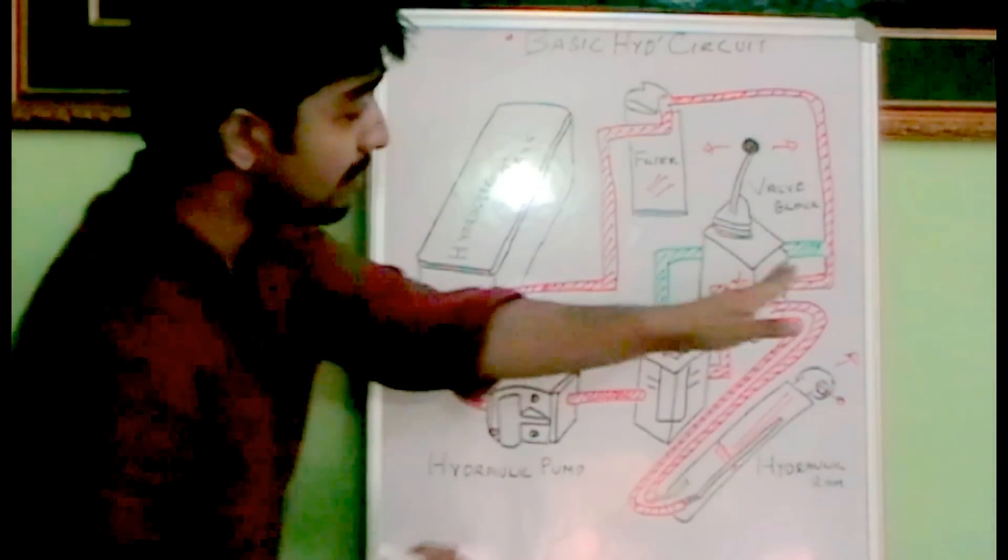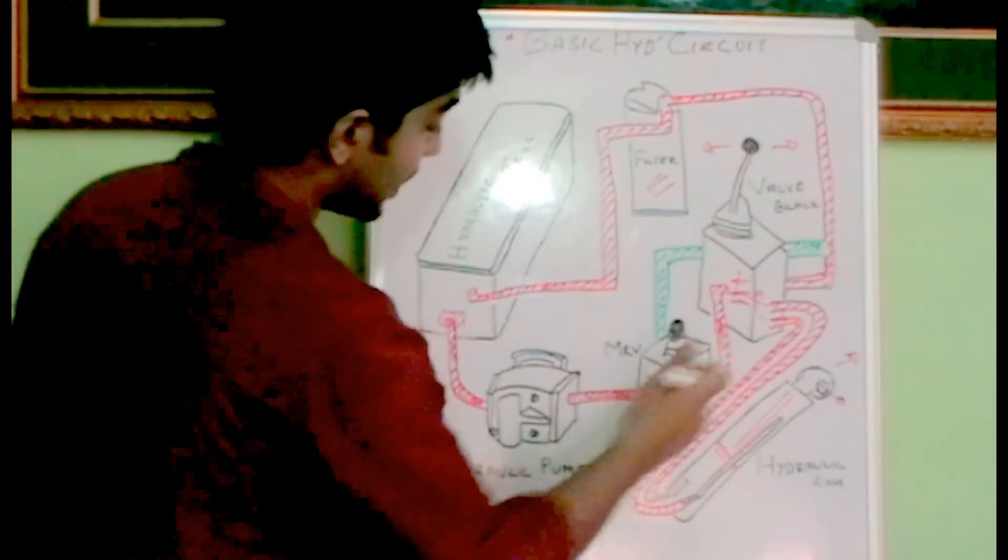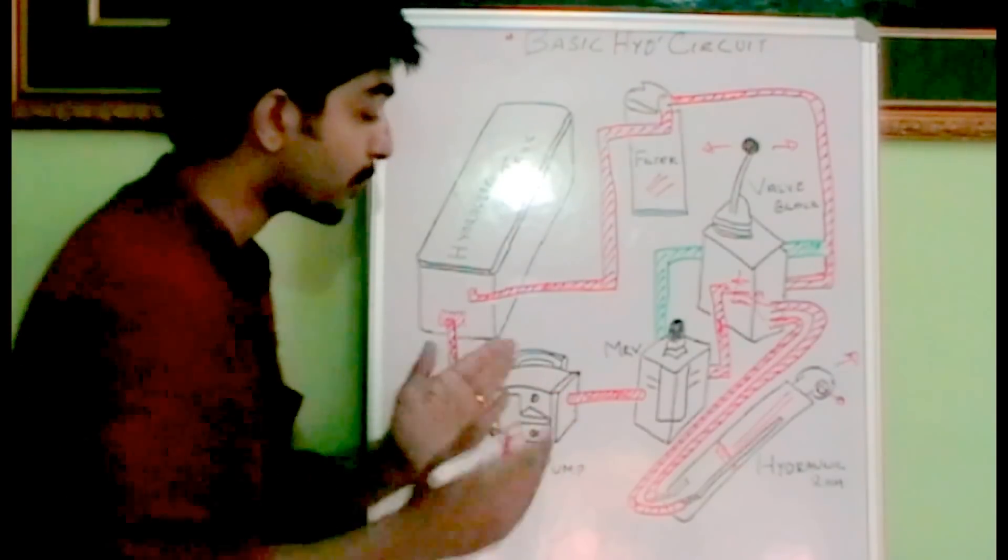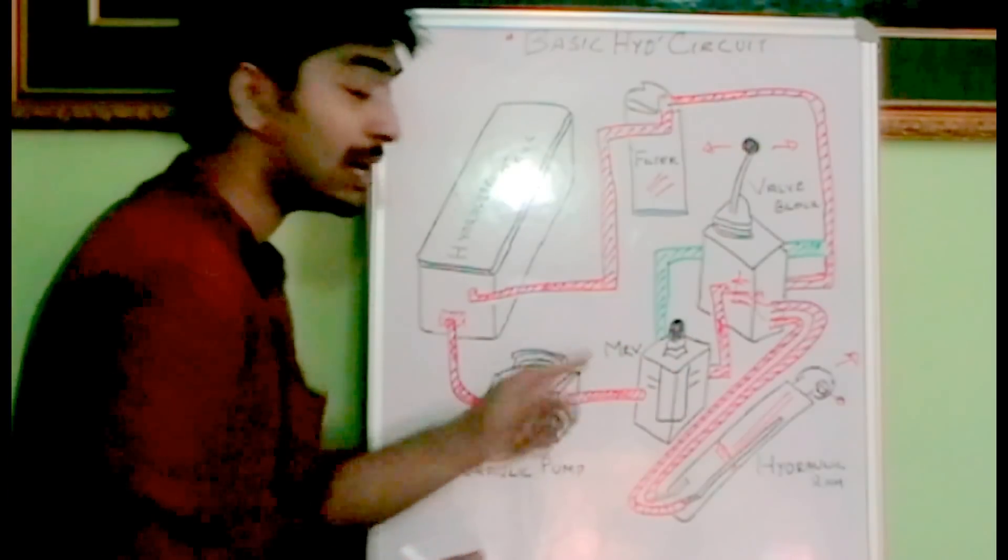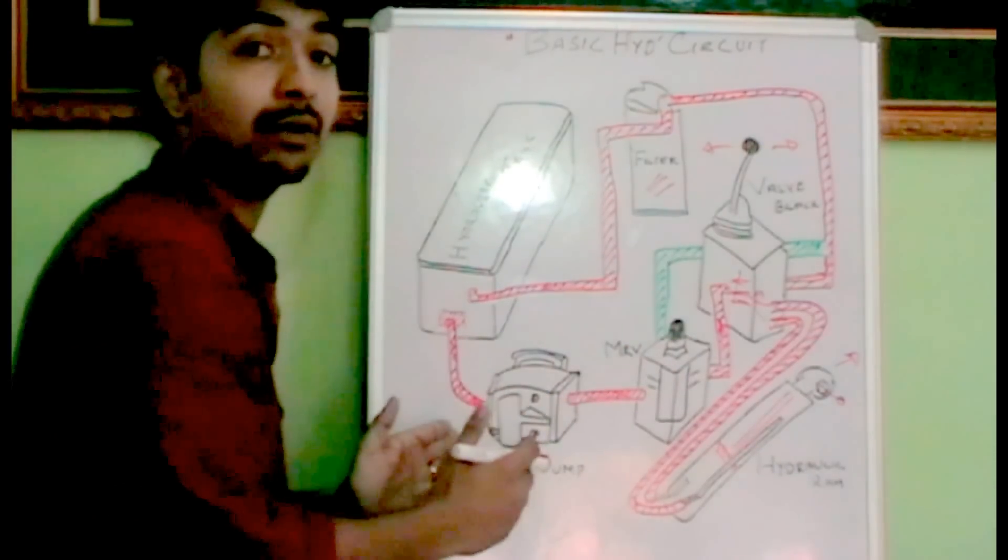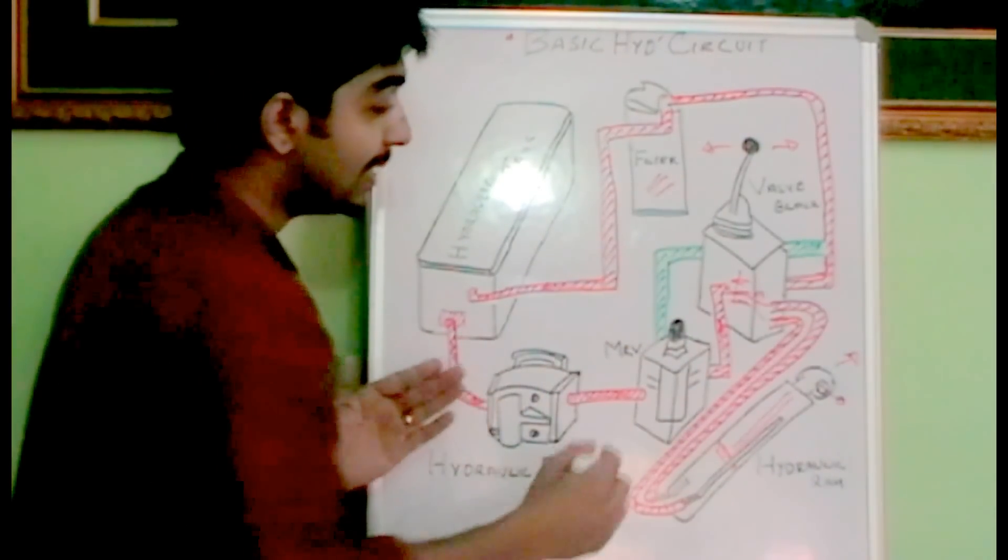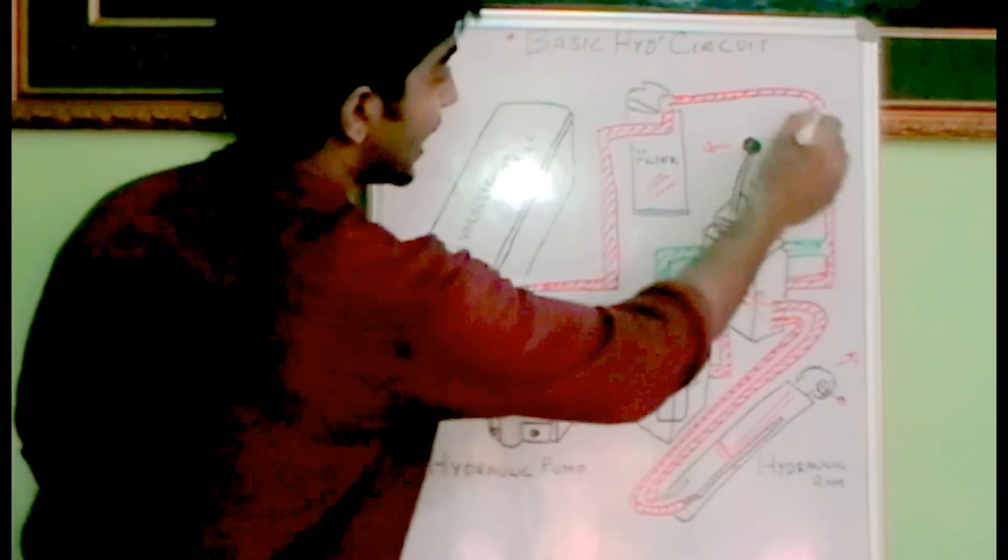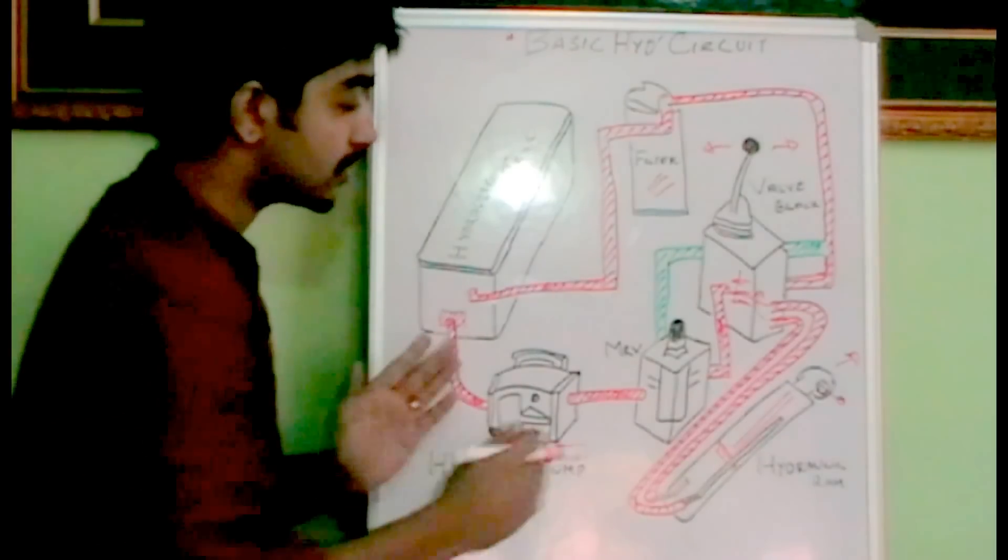If back pressure occurs, that pressure will come towards the hydraulic pump. We have a relief valve for safety purposes to protect or safeguard the hydraulic pump. The purpose of the relief valve is to protect the hydraulic pump. If back pressure is generated or coming, it gets released towards the hydraulic tank through this line without hurting the hydraulic pump. That's the function of the relief valve.